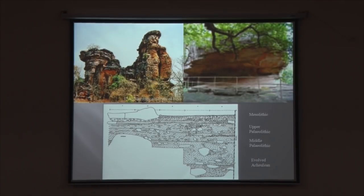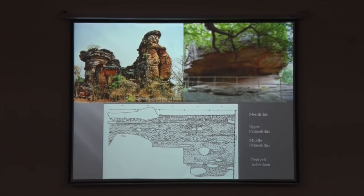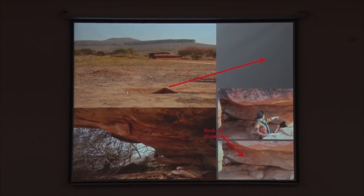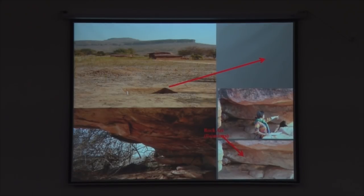The continuity of evidence does not imply a simple technological transition from one phase to another. Initially, this particular sequence was used to generate a technological continuity model. But now there is a new technological replacement model arguing for the expansion of Homo sapiens into the Indian subcontinent — replacing Homo erectus and so on. This is the landscape associated with the Vindhyas: outcrops with rock shelters, pediment surfaces with human occupation, and excavations yielding lithic assemblages from different strata.